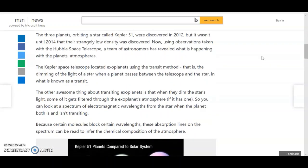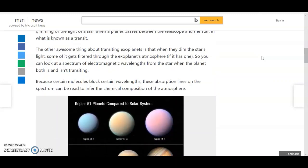The other awesome thing about transiting exoplanets is that when they dim the star's light, some of it gets filtered through the exoplanet's atmosphere, if it has one. So you can look at a spectrum of electromagnetic wavelengths from the star when the planet both is and isn't transiting. Because certain molecules block certain wavelengths, these absorption lines on the spectrum can be read to infer the chemical composition of the atmosphere.